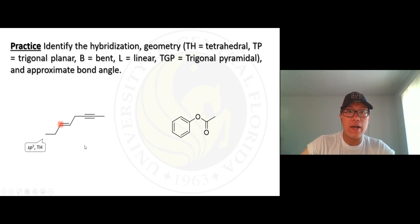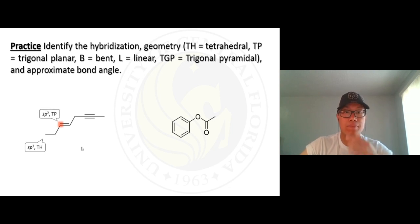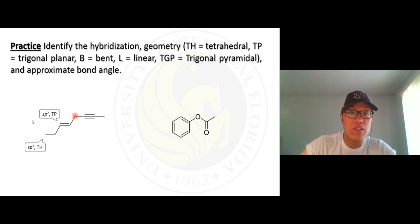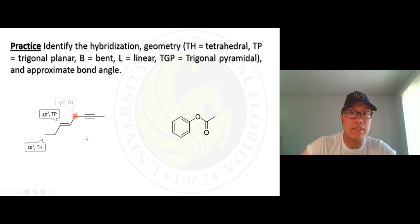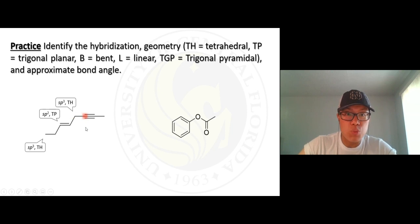So this carbon is sp2 hybridized and the geometry is trigonal planar. Moving on, this one also has one bond, a double bond, and two hydrogens — four bonds total — so it's sp3 and the geometry is tetrahedral, 109.5 degrees.